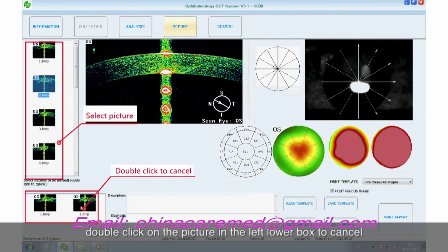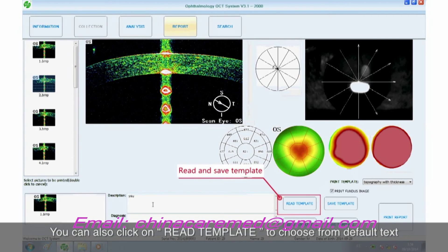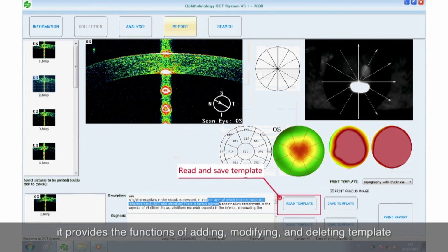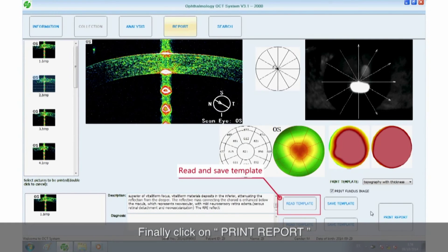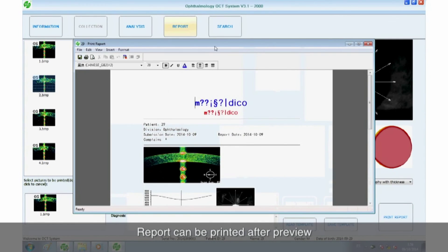In description box, words can be input directly. You can also click on read template to choose from default text. Meanwhile, it provides the functions of adding, modifying and deleting template. Finally, click on print report. Report can be printed after preview. Thank you.